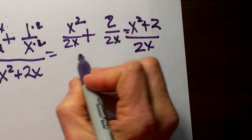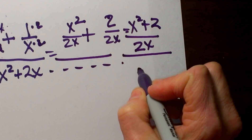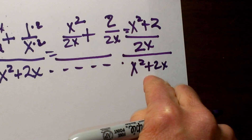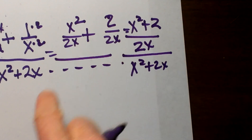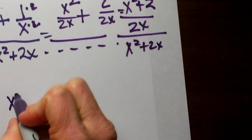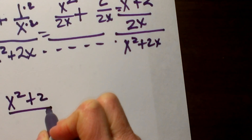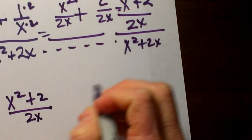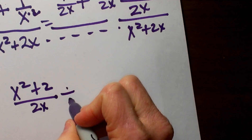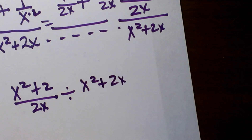Now I can bring my denominator all the way over — I don't have to do much with it right now, it is just x squared plus 2x. Now I have the double stack, so instead of the double stack I am going to write it as a long division problem: x squared plus 2 all over 2x, divided by x squared plus 2x.